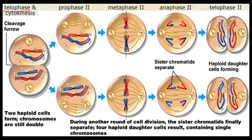Let's have a look at the same cell in telophase. It is now dividing to form two cells. If you look at the two new cells, how many chromosomes do they have? They each have two chromosomes — in other words the chromosome number has halved and the cells are haploid. But it's important to notice that the chromosomes themselves are still double: the two chromatids are still attached.